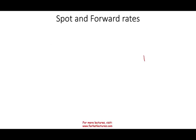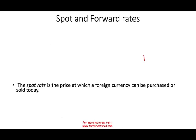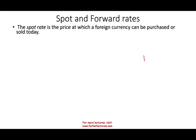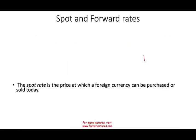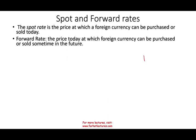We also need to be familiar with two terms: the spot rate and the forward rate. The spot rate is the price at which a foreign currency can be purchased or sold today. For example, today for every one US dollar, you get $1.27 Canadian — that is the spot rate. The forward rate is the price today at which a foreign currency can be purchased or sold sometime in the future.